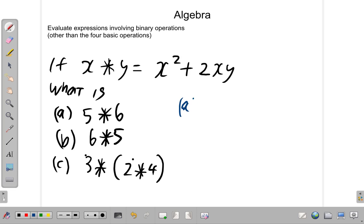Let's look at part A. Here, 5 asterisk 6 means wherever you see X, you put 5. Because it says X first, so it's X. And then Y second. This is also X, then Y in the second place. You put it for Y. So, you have to be careful about the position that these things take.